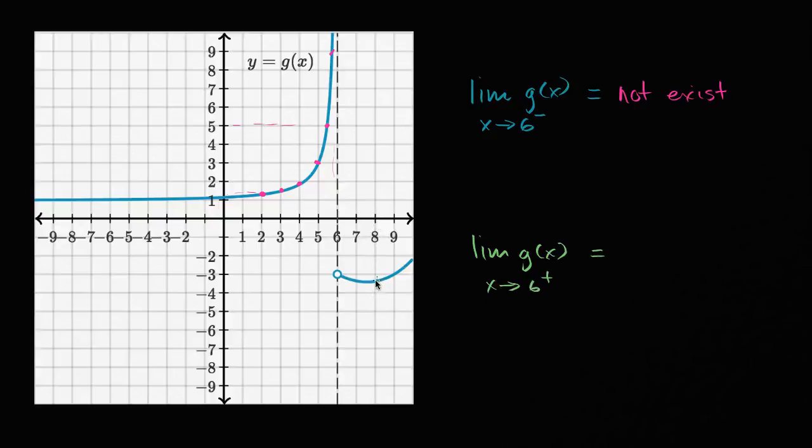We have g of eight is there, g of seven is there, g of 6.5 looks like it's a little less than negative three, g of 6.01, a little even closer to negative three, g of 6.00001 is very close to negative three. So it looks like this limit right over here,